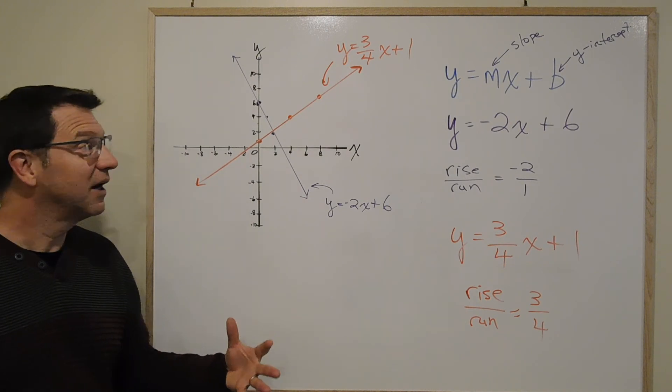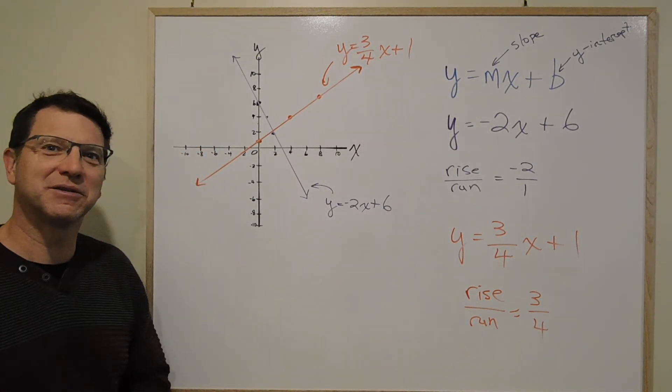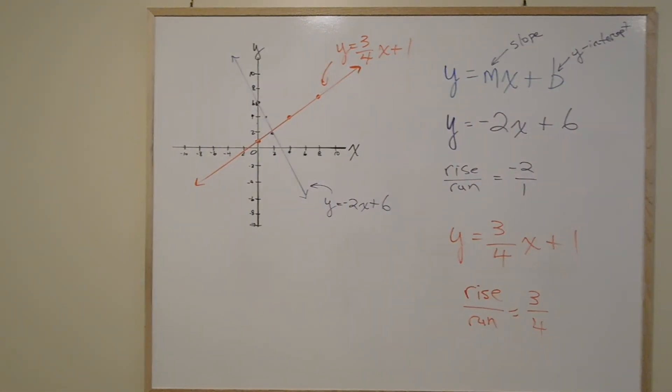So that's how you graph a line when you have an equation in the form y equals mx plus b. See you in a couple slides. Alright. Thank you.